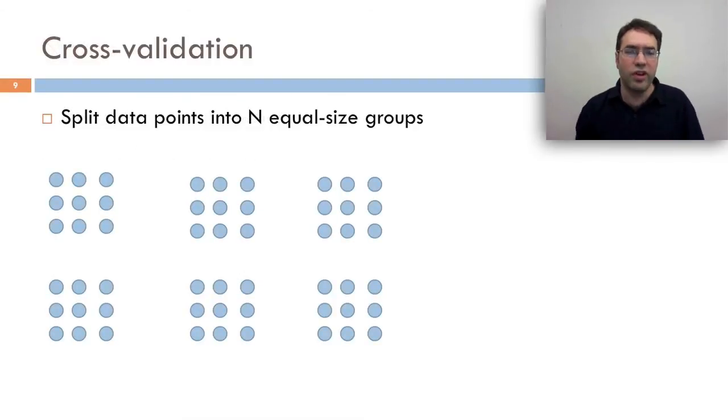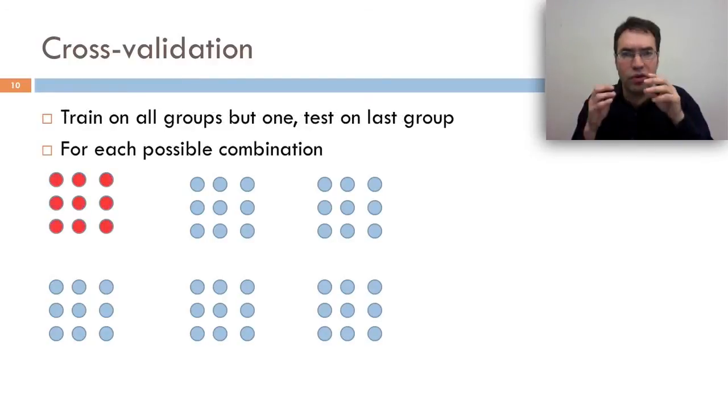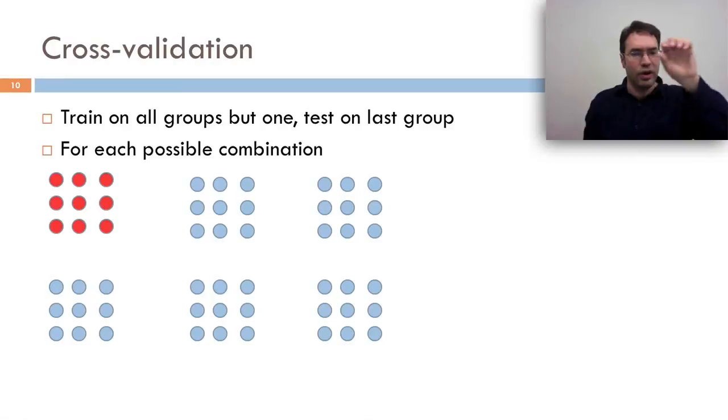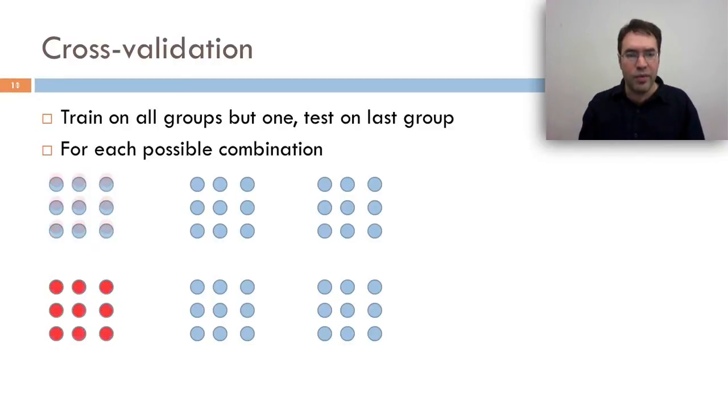Cross validation is an alternative where you split data points into n, in this case six, equal size groups. So we've taken our 54 data points and we've split them into six groups of nine apiece. So in cross validation, you're going to train on all the groups but one, and test on the last group for each possible combination. So we're going to take these five blue groups, we're going to train on them, and then we're going to test on the red group. And then we're going to change which one's the red group. And we're going to train on these five blue groups and test on this red group, and so on for all possible combinations.